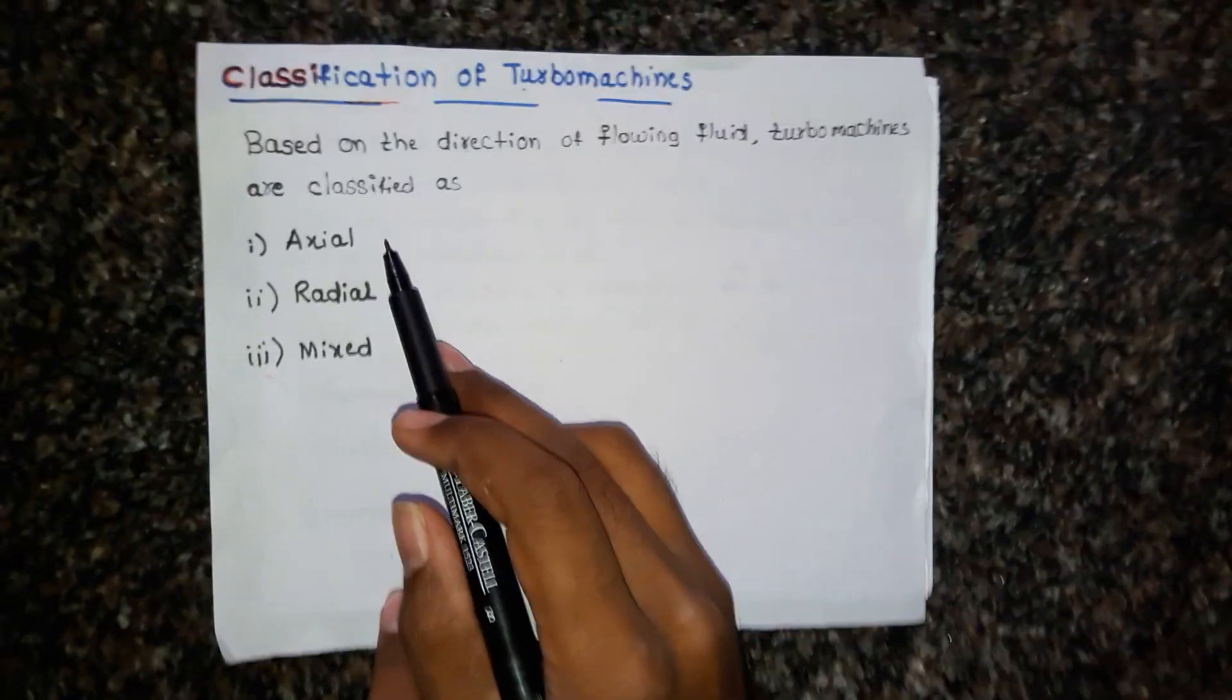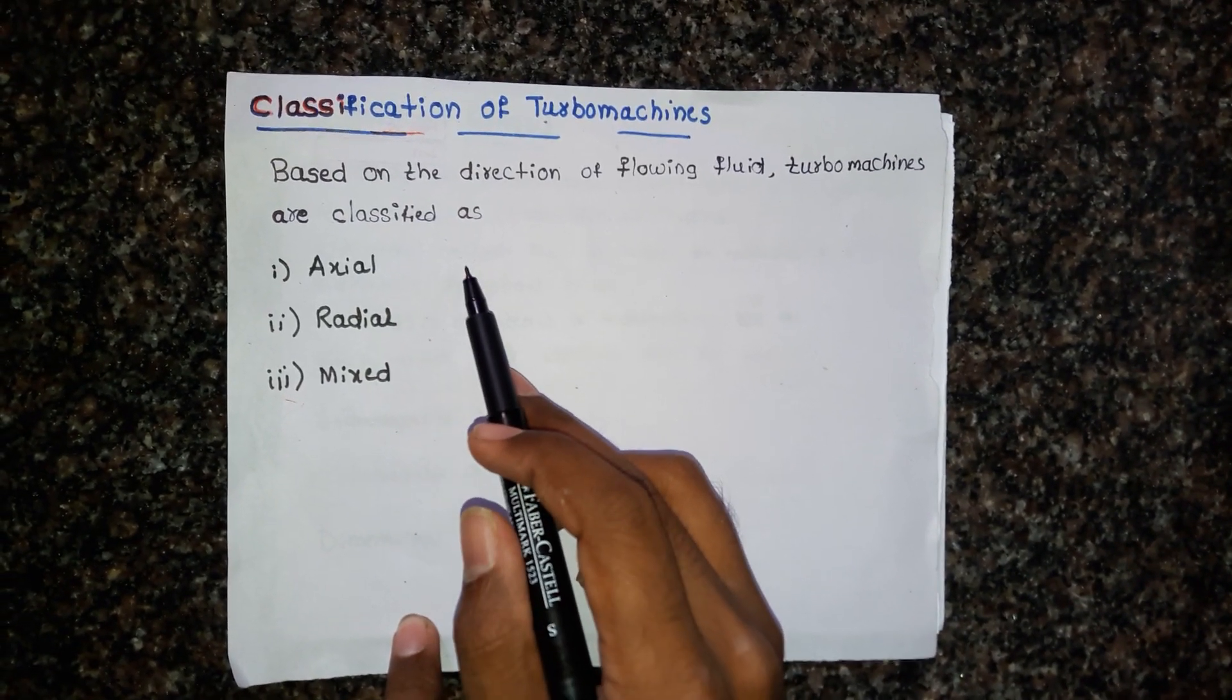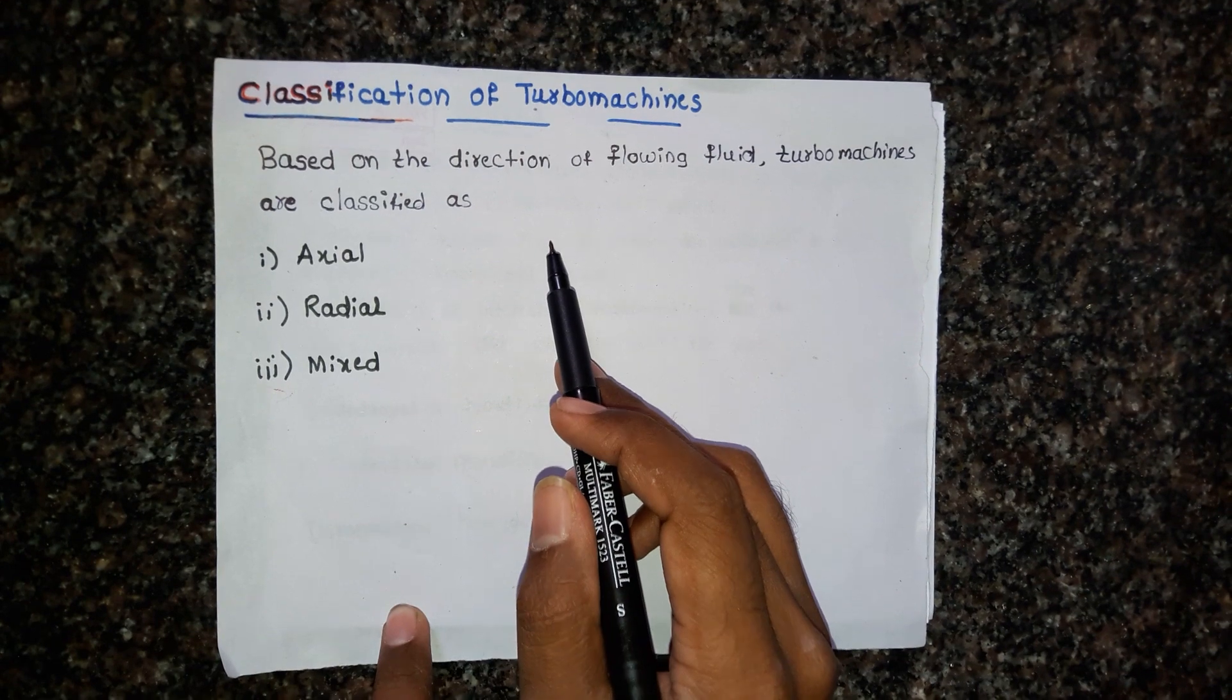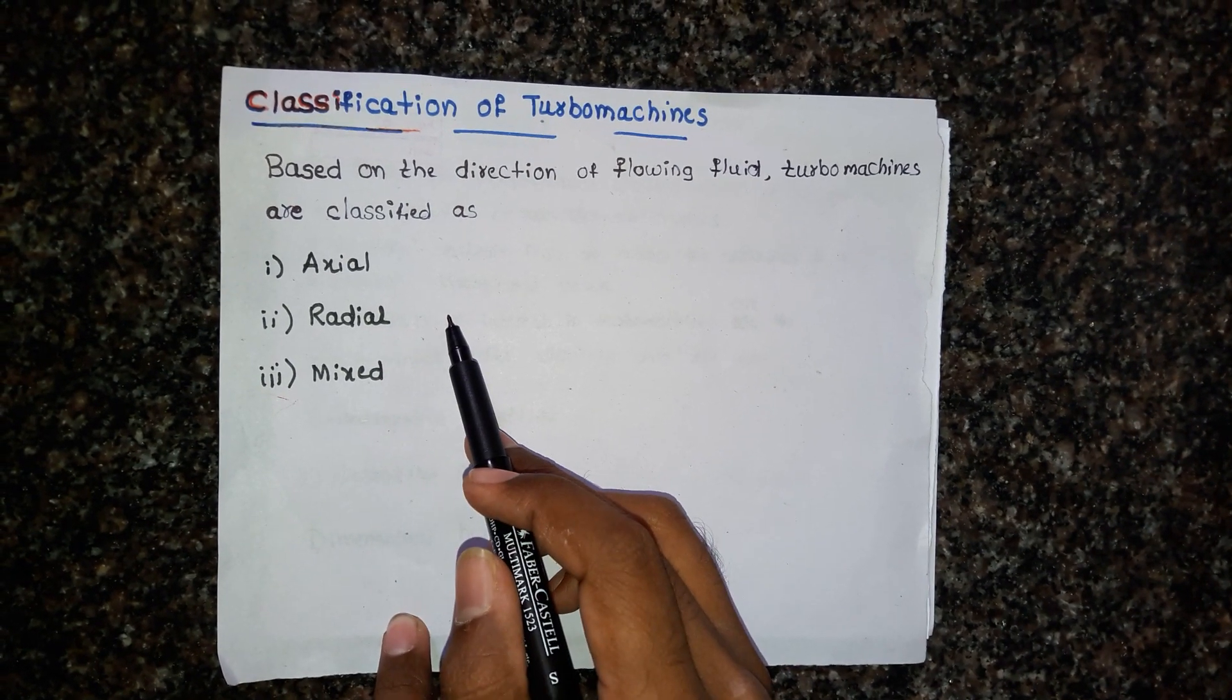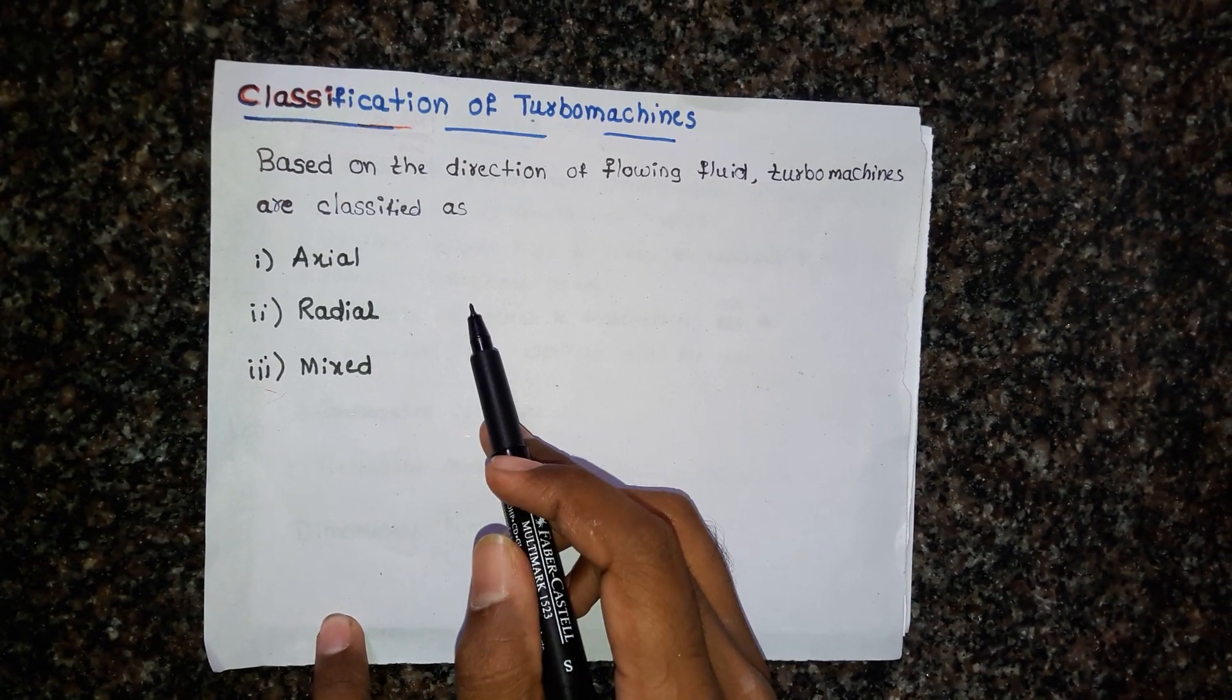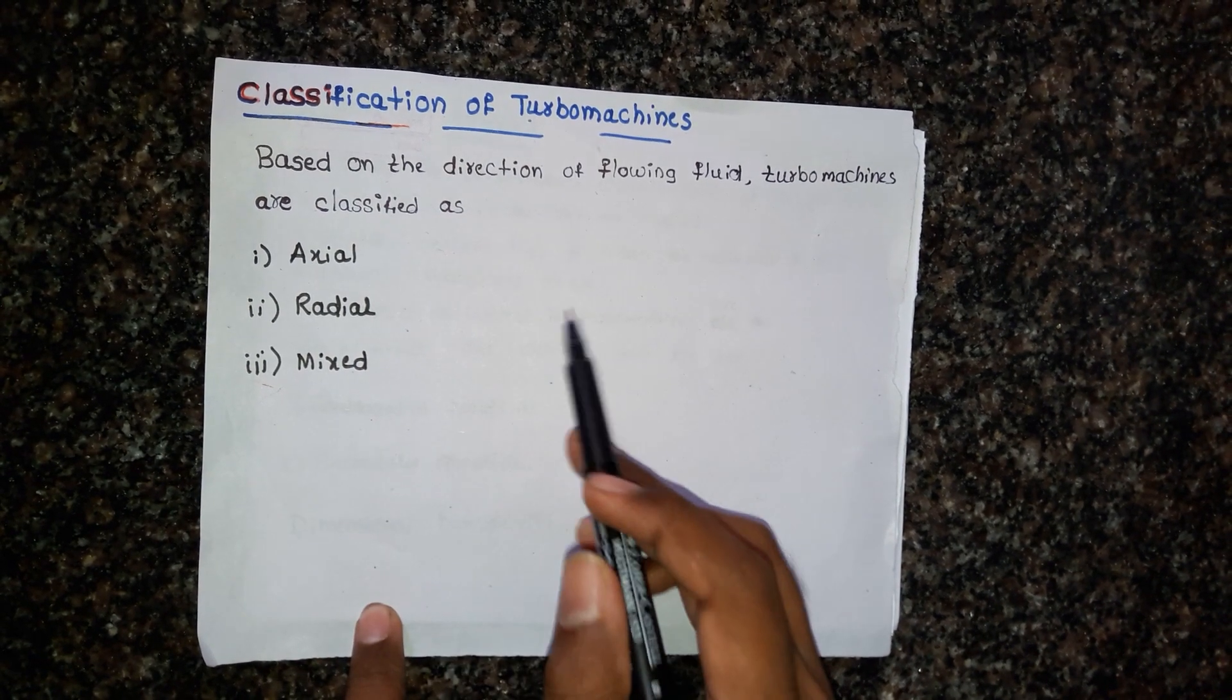In axial type turbomachines, the fluid inlet is axial and exit is axial. In radial type turbomachines, the fluid entering is in radial direction and exit is in radial direction.